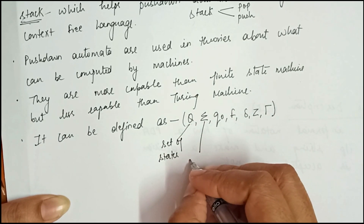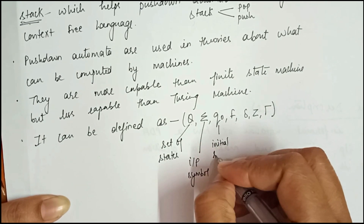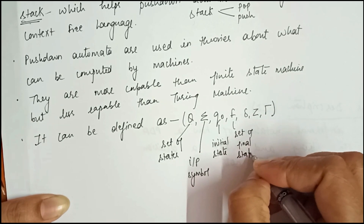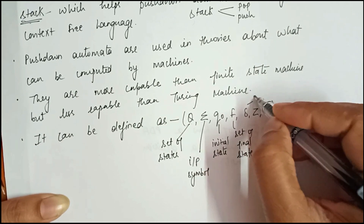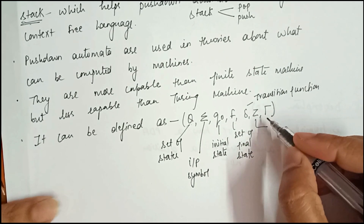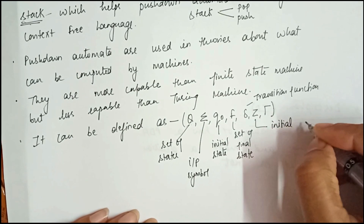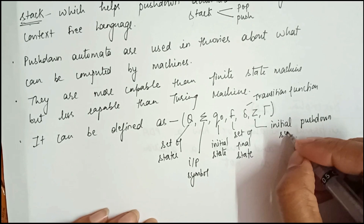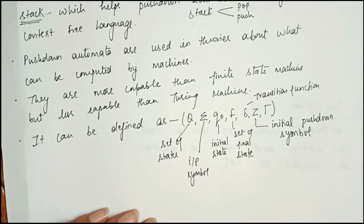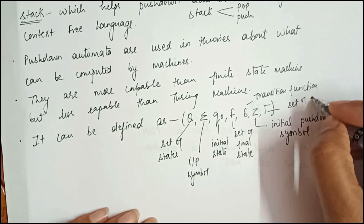Σ is the input alphabet, q₀ is the initial state, F is the set of final states, δ is the transition function. Z and Γ are two new symbols added in the PDA — Z is the initial pushdown symbol, which is always at the bottom of the stack, and Γ (Tau) is the set of pushdown symbols.